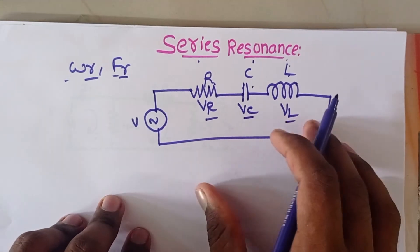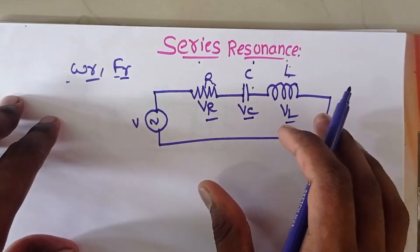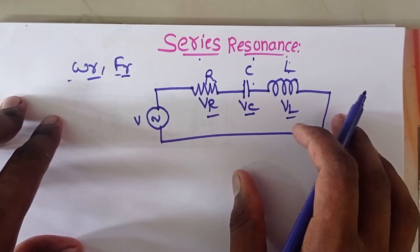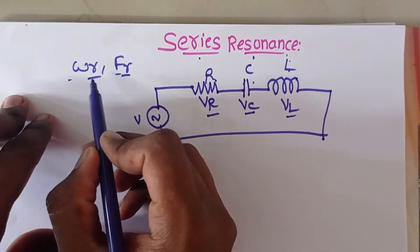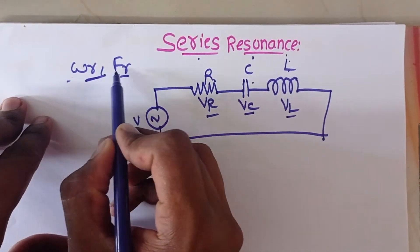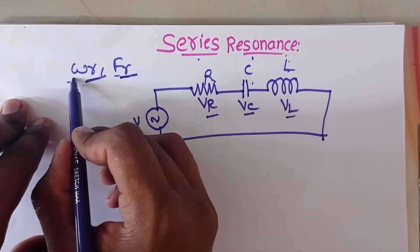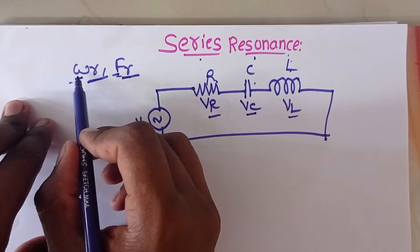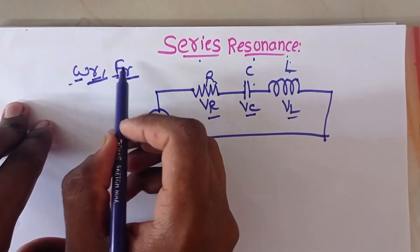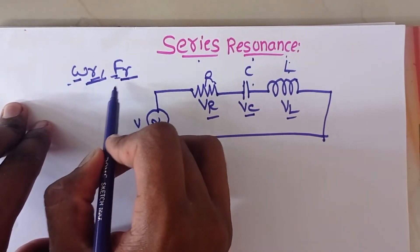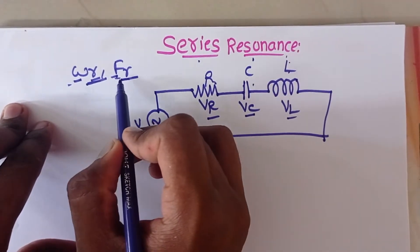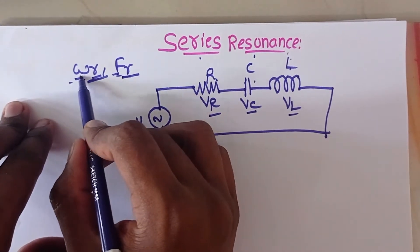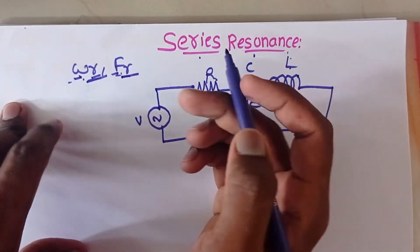Now we need to find the resonance frequency. Resonance frequency is nothing but Omega_R or F_R. Here Omega and F are frequencies, and R indicates resonance. Resonance frequencies are indicated by Omega_R or F_R.